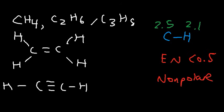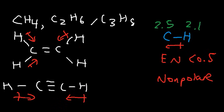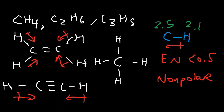Nevertheless, there is a small dipole moment pointing toward the more electronegative carbon atom, but these dipole moments cancel out. For acetylene, the arrows point in opposite directions and cancel. For ethene C2H4 they cancel as well. In methane, all dipole moments cancel, all pointing toward the more electronegative carbon center.